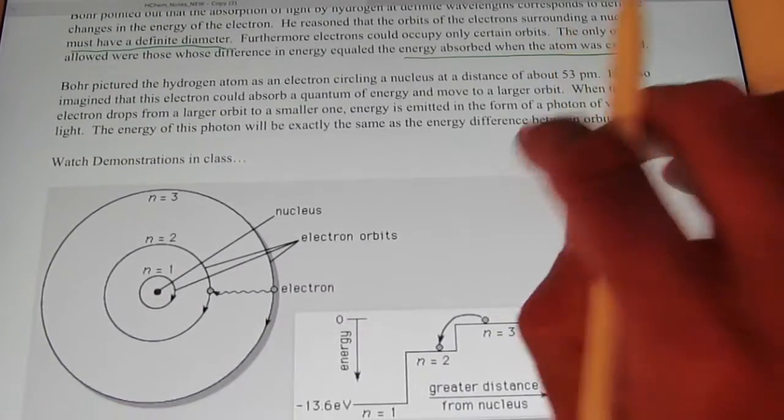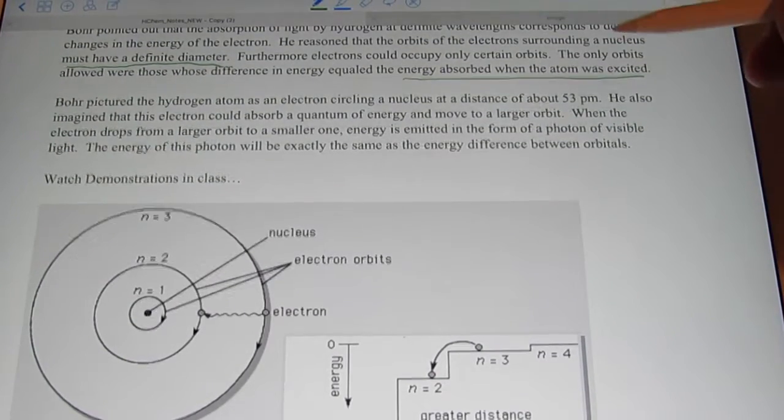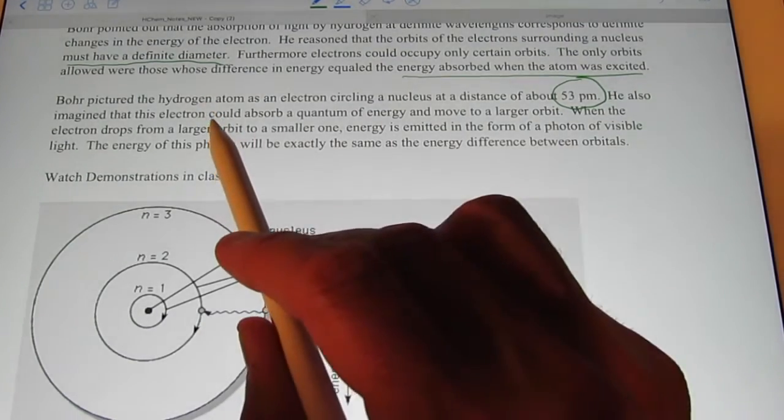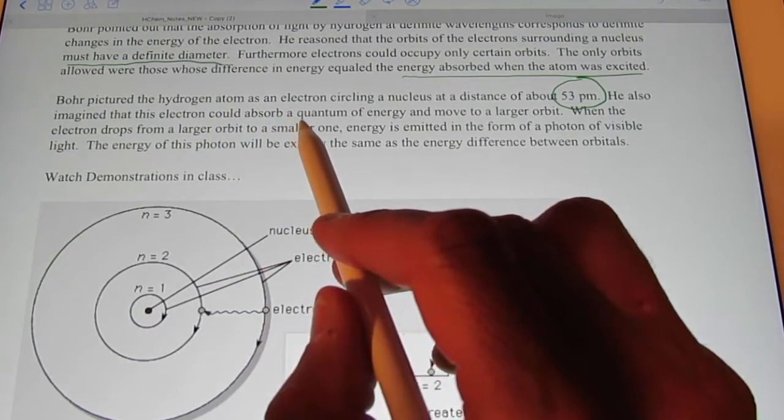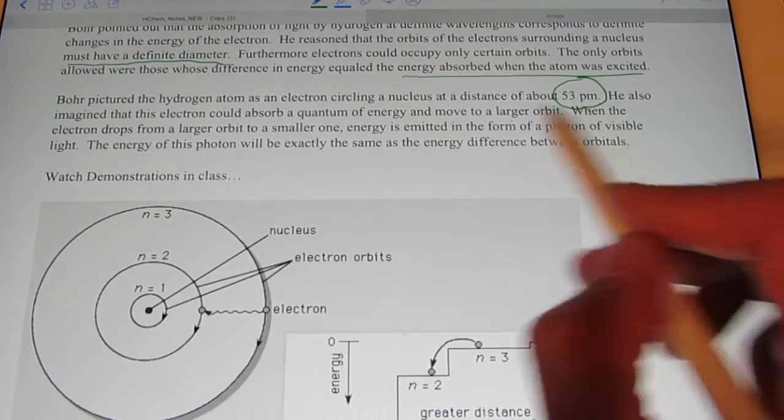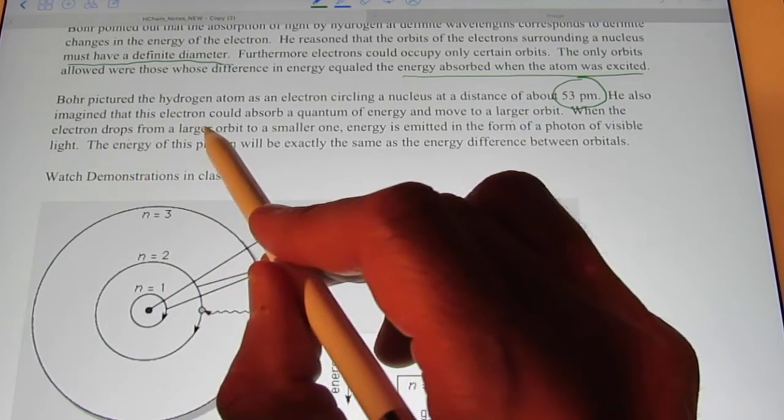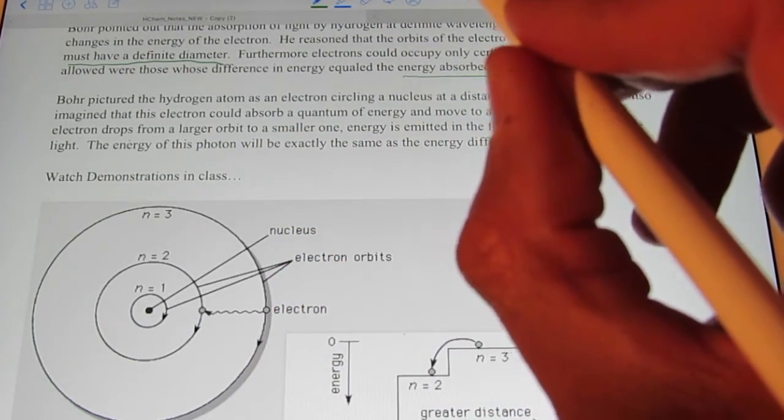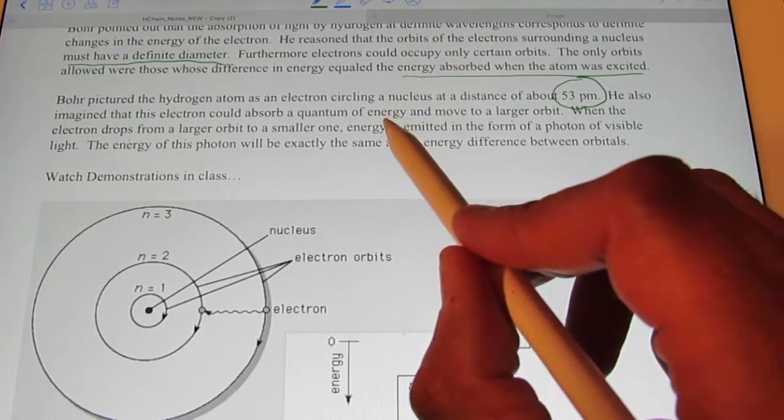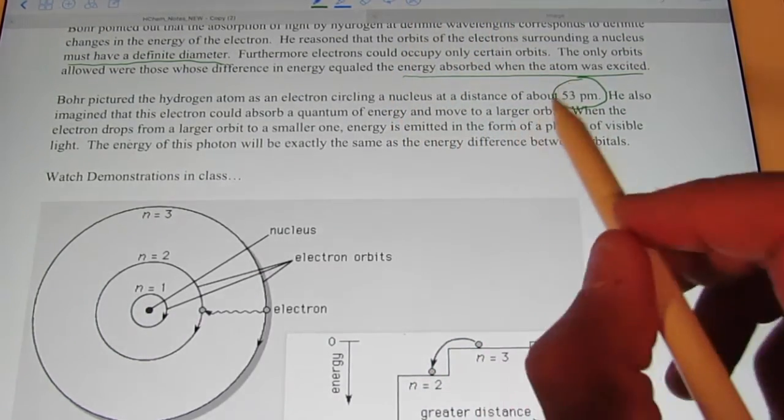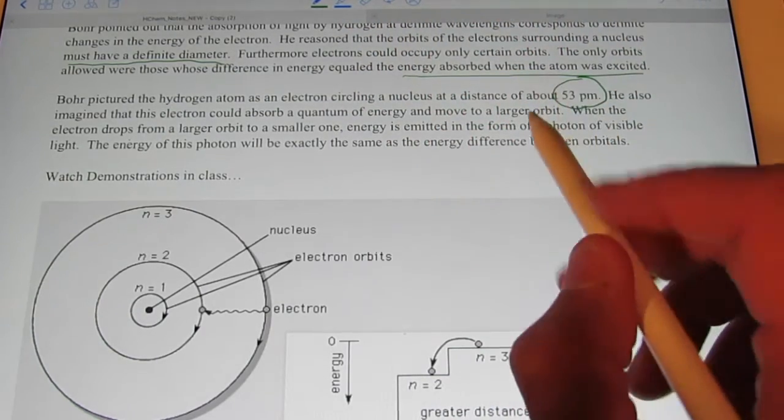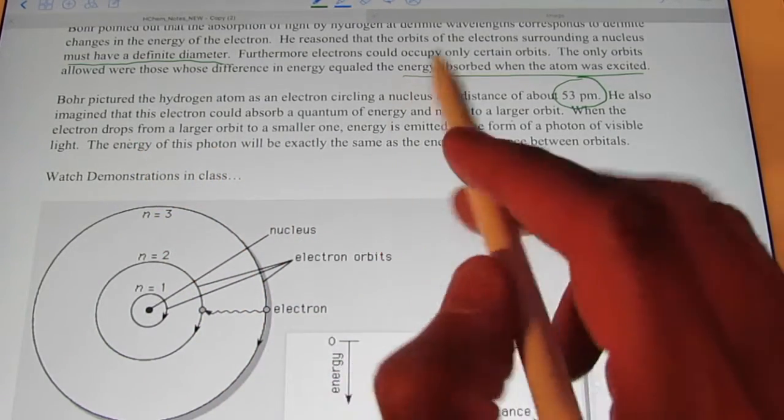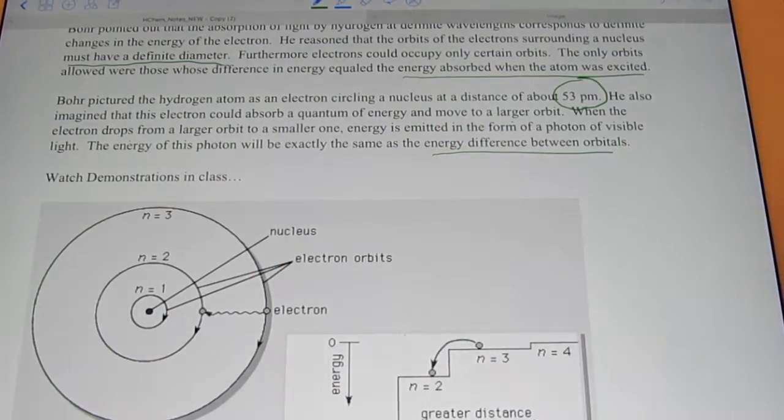Bohr pictured the hydrogen atom as an electron circling the nucleus at a distance of about 53 picometers. He also imagined that this electron could absorb energy and move to a higher orbit. When the electron drops from that higher orbit to a smaller one, let's see what would happen. If it absorbed energy to go up, when it came back down it must emit or give off energy of the same amount in the form of a photon of visible light. The energy of this photon will be exactly the same as the energy difference between the orbitals.